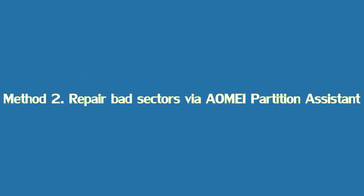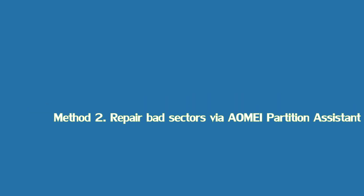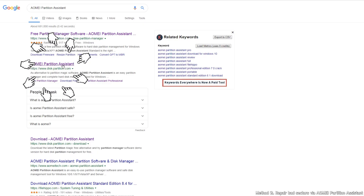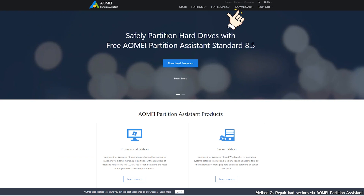Method 2: Repair bad sectors via AOMEI Partition Assistant. AOMEI Partition Assistant Standard is a free and safe partition tool which can help to manage and partition your hard drive. You can use the built-in feature Check Partition to repair bad sectors on the hard disk. Search AOMEI Partition Assistant on the internet and download the standard version for free.